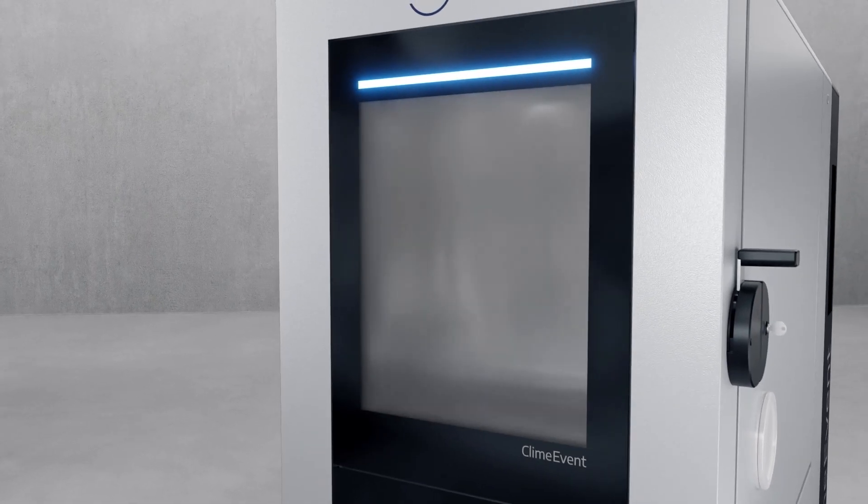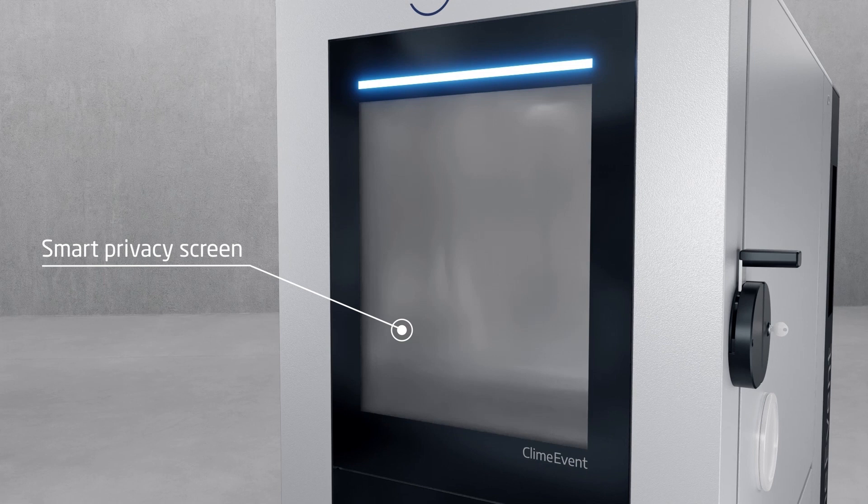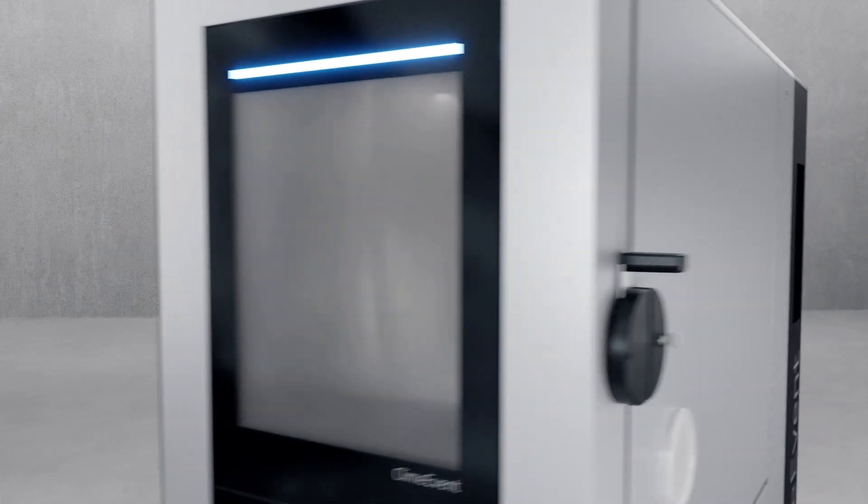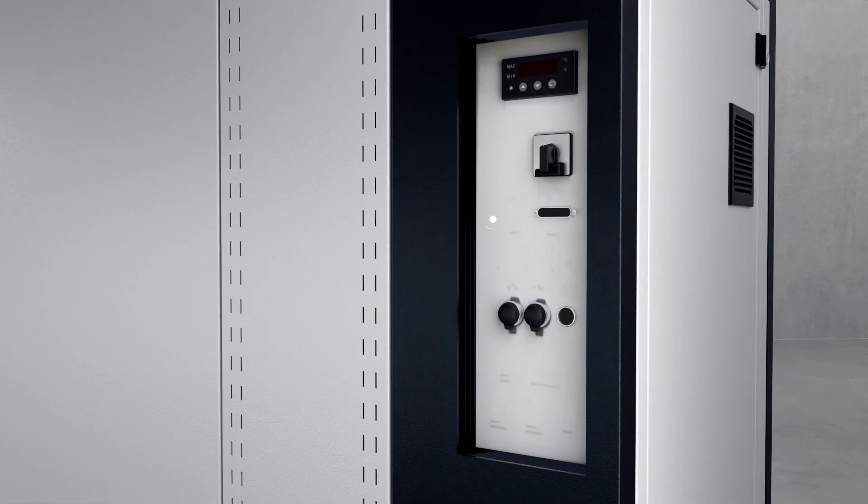To protect the inside of the test chamber from curious eyes, the viewing window can be optionally equipped with a switchable privacy screen. At the push of a button, the electrochromic paint package provides reliable opaque protection of the test chamber. In the user administration in WebSeason, the assignment of rights for controlling the privacy screen can be assigned to the user individually, ideal for keeping developments or NDA-protected test specimens secret.